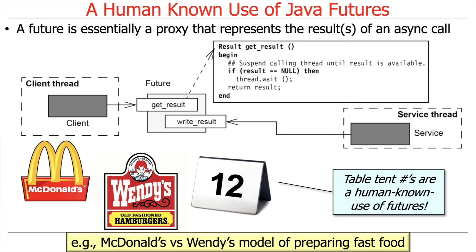When your food is done, you can go back up to the pickup window and show them your coupon, table tent number, or receipt, and if your food is ready, they will give it to you. That's what's called a polling-based approach. Or they might come out and deliver it to you — if you go to certain places, usually delis, they'll give you a number on a large stake or post, and then come by and find you and give you your food. That's the callback model. Those are two different ways to redeem your futures to get connected with the food that you ordered.